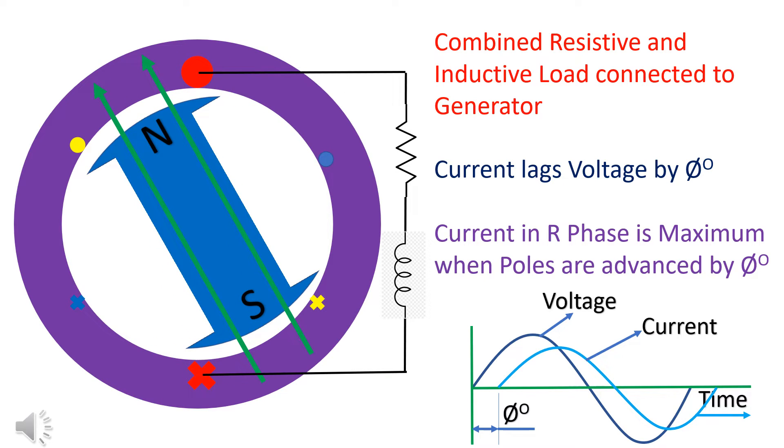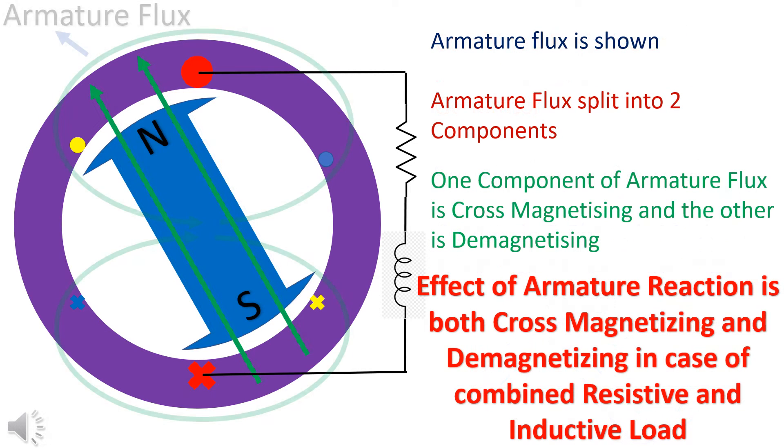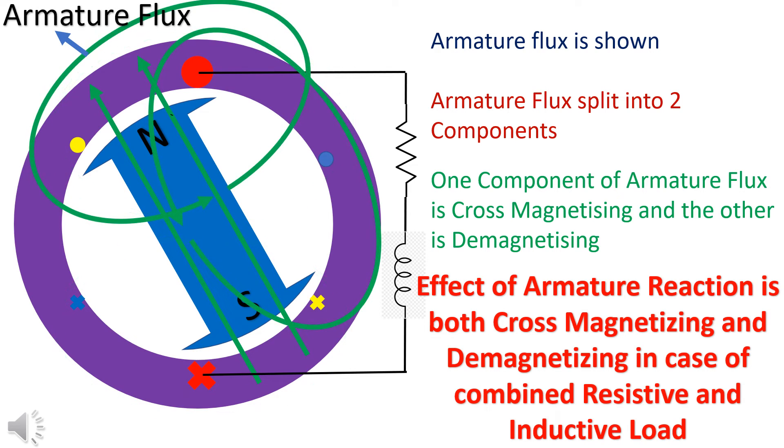Lagging load is a combination of resistive and inductive load, like induction motor load. To get maximum current in the conductor, poles are required to be advanced by δ degrees. Armature flux is split into two components. One component is cross-magnetizing and the other is demagnetizing.